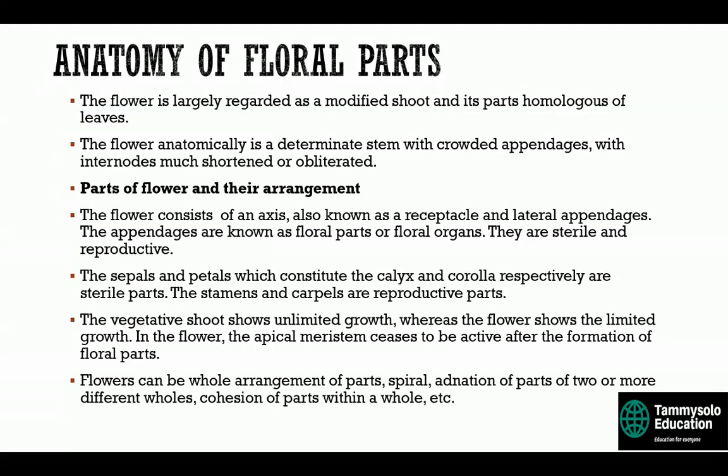Once the entire flower is formed, the apical meristem ceases to divide any further. It has limited growth, unlike the vegetative part which continues to grow — except at the time of flower formation for annual plants. For perennial plants, the vegetative part continually grows but there is a pause during the flowering stage, after which it continues again.